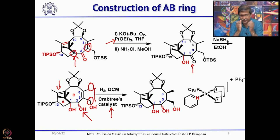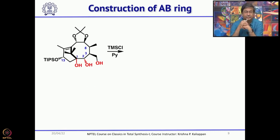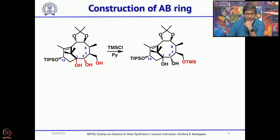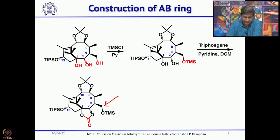Now you have the methyl group, CH2OH, primary alcohol, secondary alcohol, and tertiary alcohol. You need to protect some of them. The primary alcohol can be protected in the presence of secondary and tertiary using in-situ temporary protection with TMS chloride. Then the secondary and tertiary alcohols can be protected as a cyclic carbonate by treating with triphosgene and pyridine. Now that is protected, and what you need is to homologate the CH2OH-TMS. Only then can you carry out the intramolecular aldol reaction.